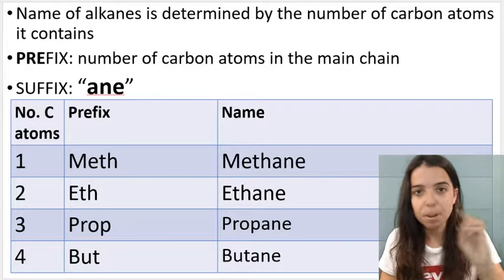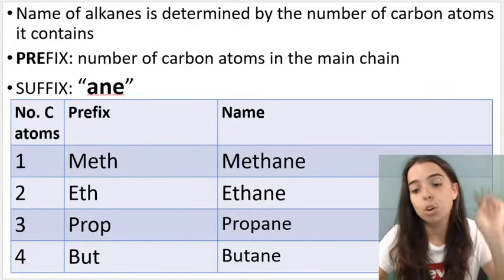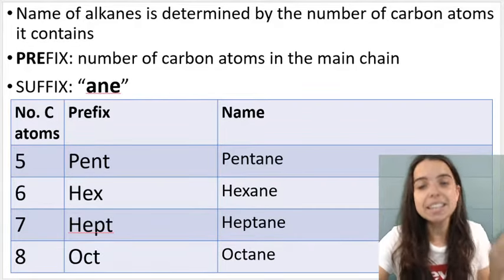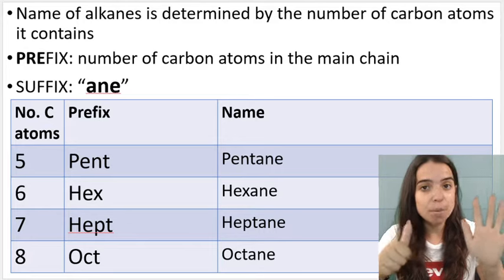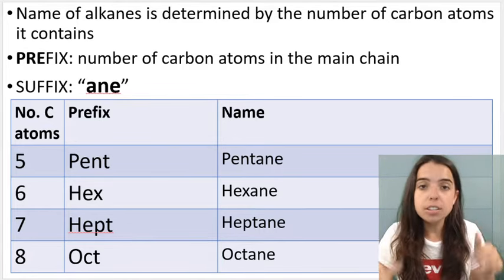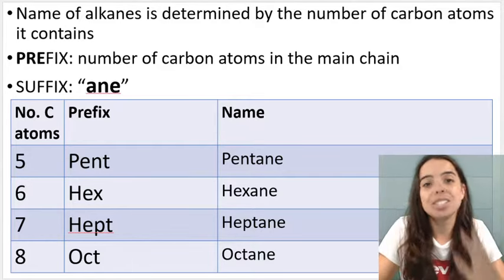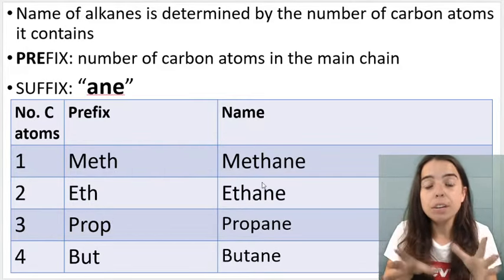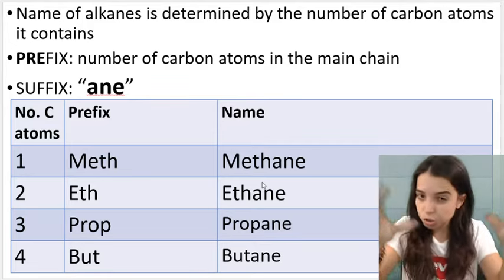Meth refers to one carbon. Eth is two carbons. Prop is three carbons. Butte is four carbons. Pent is five carbons like a pentagon. Hex is six carbons. Hept is seven. Oct is eight and we also have non which is nine and ten which is dec. Now these prefixes we use throughout naming all the homologous series. So you need to learn these.